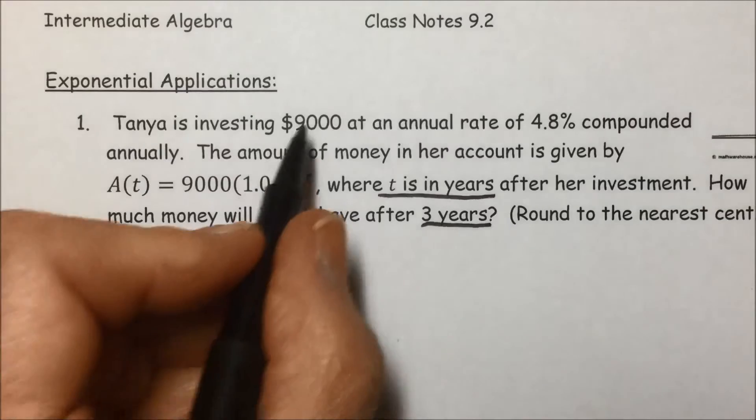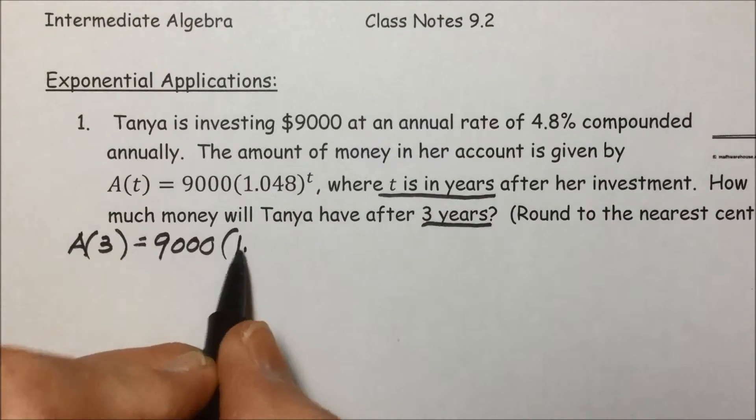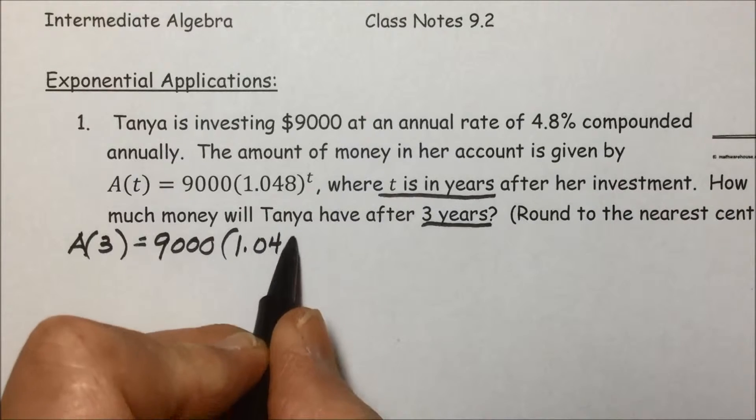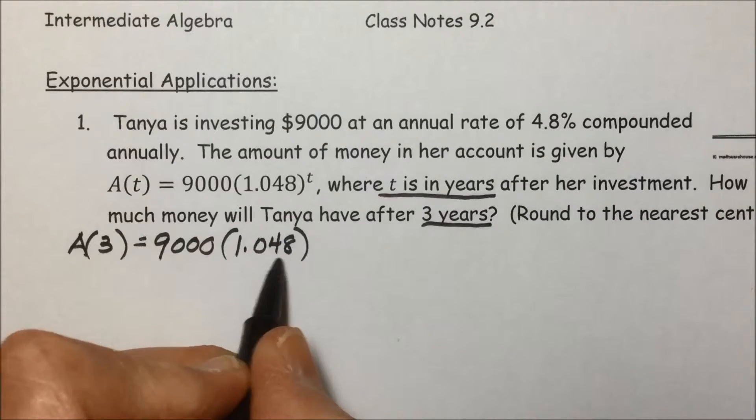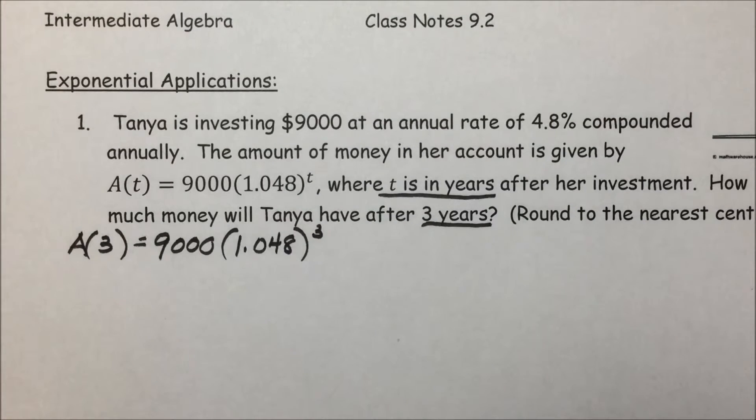Notice the $9,000 is the initial or principal investment times 1.048. This is her annual interest rate raised to the third power.